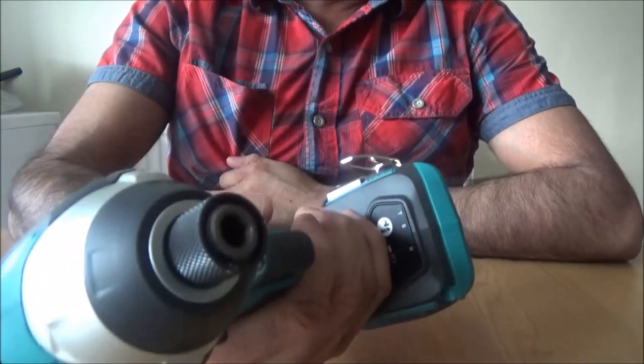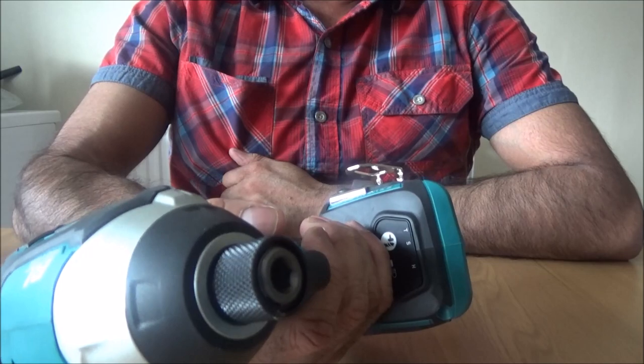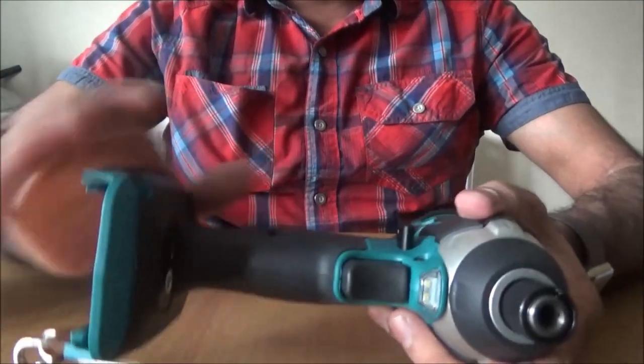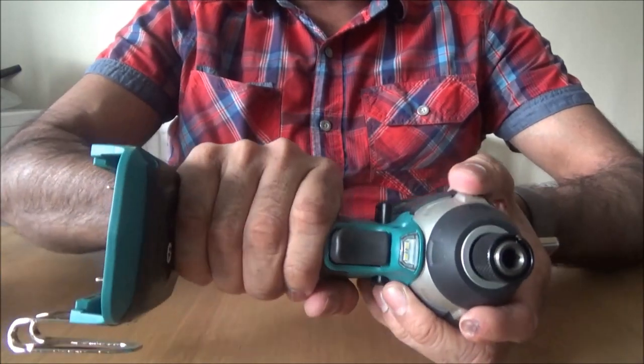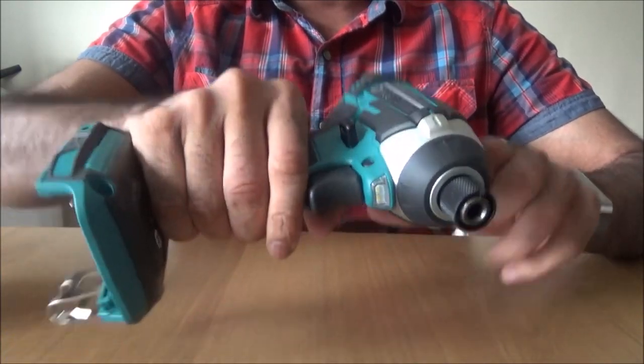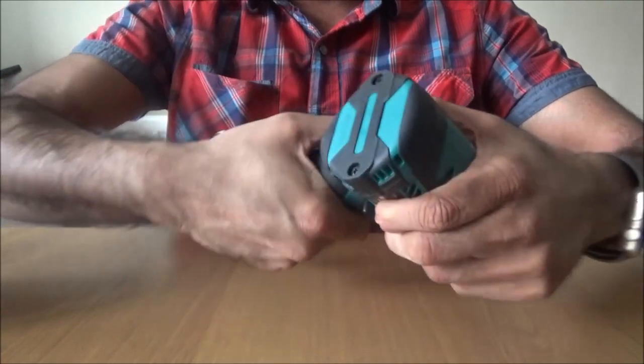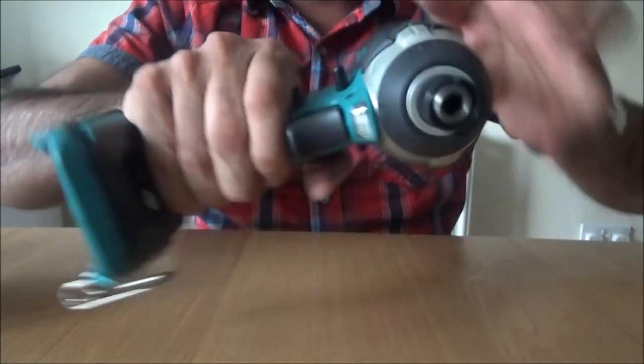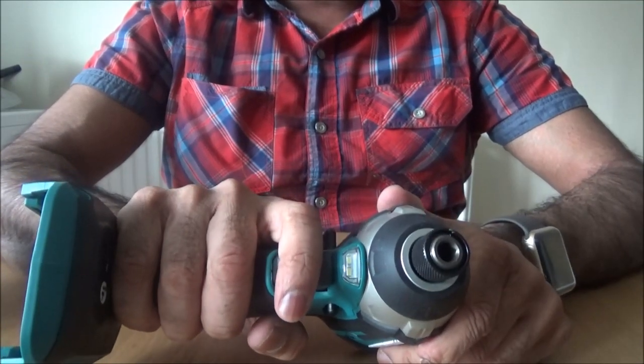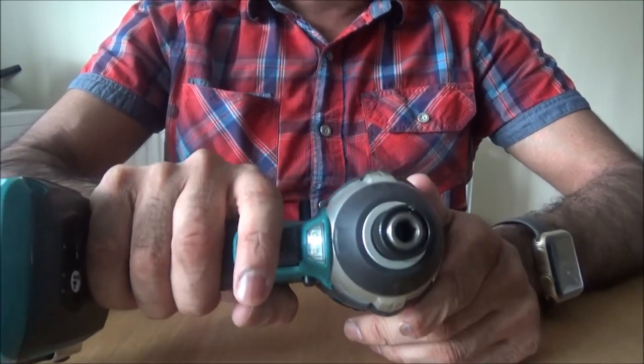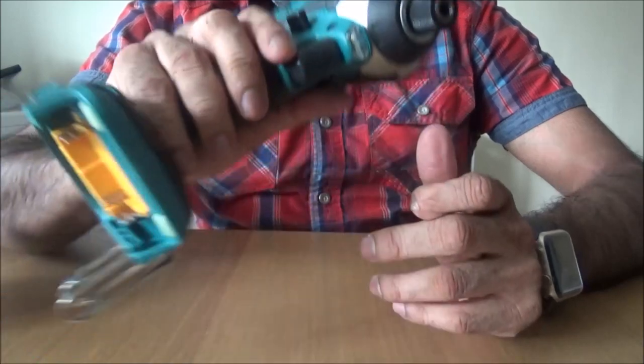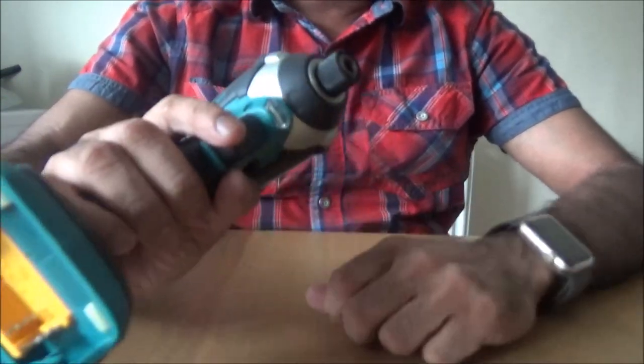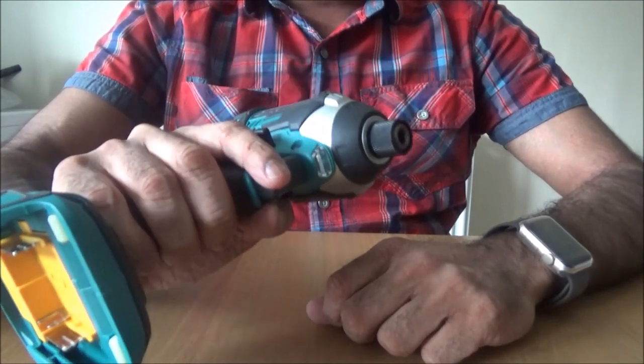This is Makita DTD154Z, that's the main body. The first thing you realize about this, the size of it, is nice and compact. It's flat at the back so you could put your hand on there when you're working, and it's really good to get into awkward spaces.